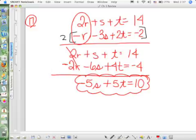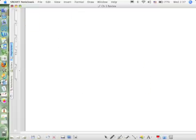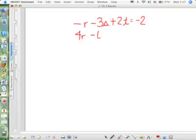What's the next thing I need to do? Take my second and third equation. My second equation was negative R minus 3S plus 2T equals negative 2. And my third? Negative 4R plus 6S plus 3T.